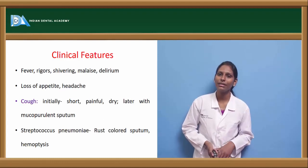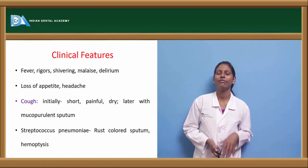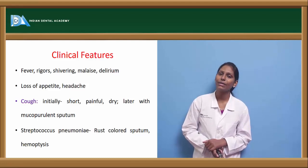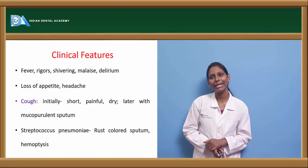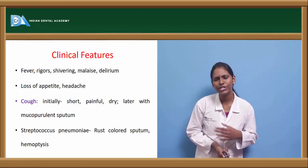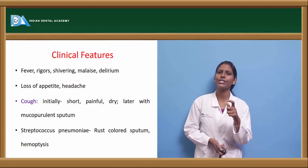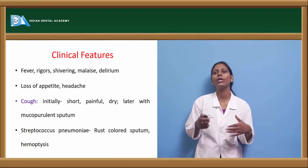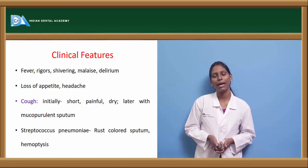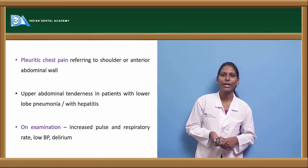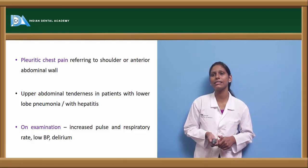Coming to clinical features, the most common symptoms are fever, rigors, shivering, malaise, delirium, and loss of appetite. Patients usually complain of headache and persistent cough which is initially dry and painful, of short duration. Later the cough becomes mucopurulent. In Streptococcus pneumoniae infection, there will be rusty-colored sputum and haemoptysis can also be seen.